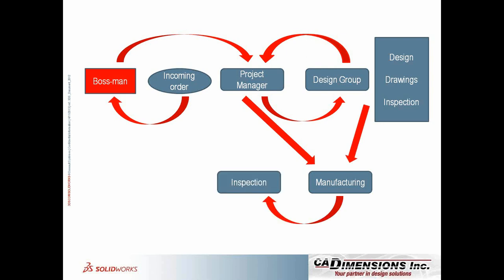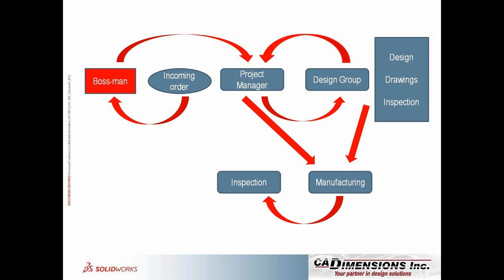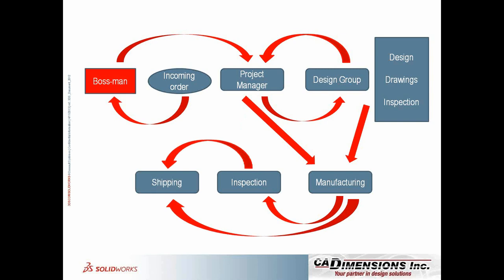Manufacturing gets the information from the design group — the data, models, drawings, inspection sheets. They make the parts and it gets sent to inspection. Hopefully it passes — it always goes that way, right? When the first piece has been inspected and everything looks good, inspection goes back to the project manager: 'Hey, it looks good.' That gives the green light, and then we're rolling with manufacturing, until it ends in shipping and goes to the customer.